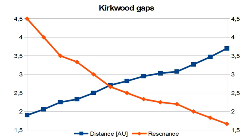A Kirkwood gap is a gap or dip in the distribution of the semi-major axes, or equivalently of the orbital periods, of the orbits of main belt asteroids. They correspond to the locations of orbital resonances with Jupiter.